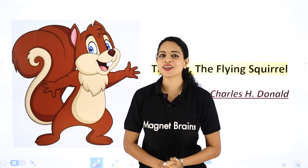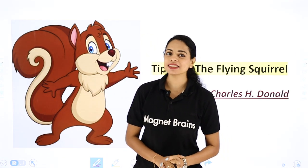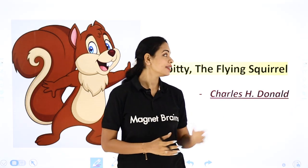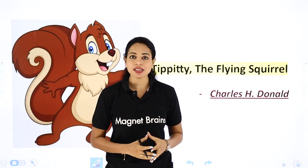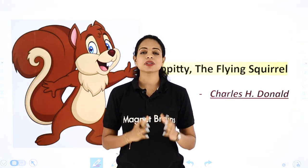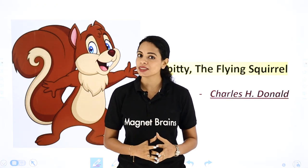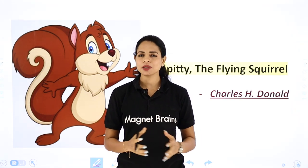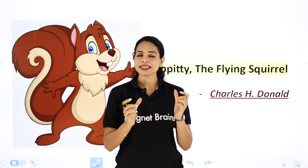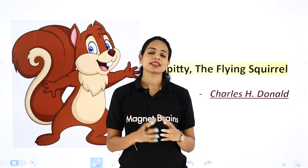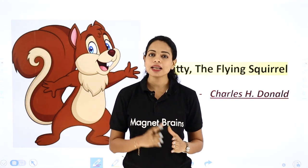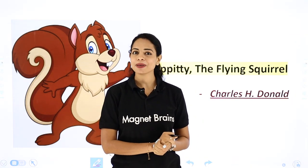Hello guys, this is Swati, your English educator from Magnet Brains. In this video we are going to do our chapter 'Tippity the Flying Squirrel,' which is the third section of our book The English Channel's second unit on Environment. It's a very interesting story written by Charles H. Donald — it is actually an extract. We are going to do this chapter's summary along with question answers. So let's begin.